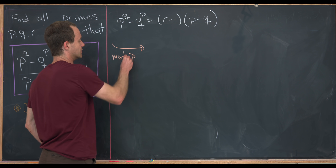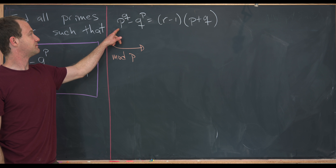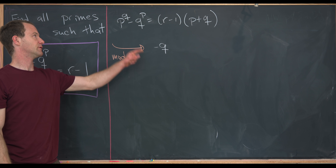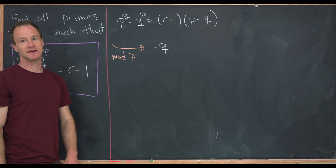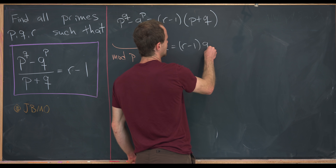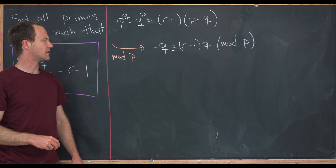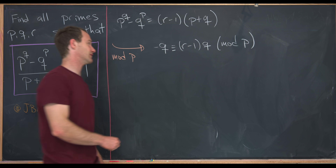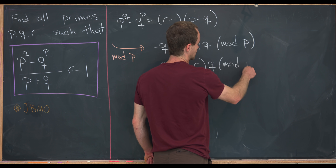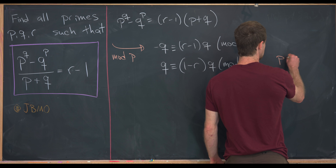Reducing modulo P: the P to the Q term becomes zero, leaving minus Q to the P. By Fermat's Little Theorem, Q to the P is congruent to Q mod P, so we get minus Q congruent to R minus 1 times Q mod P. Multiplying both sides by negative 1 gives Q congruent to 1 minus R times Q modulo P. We can cancel Q from both sides because P is not equal to Q.